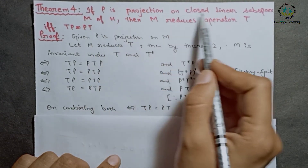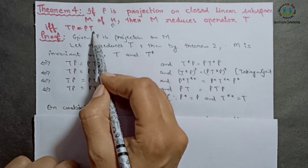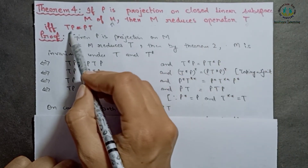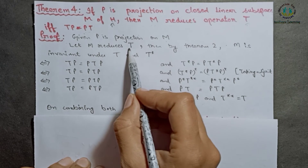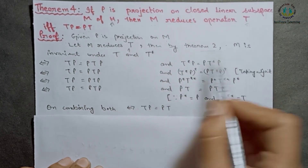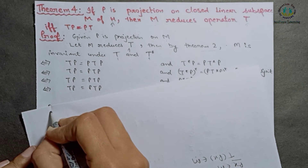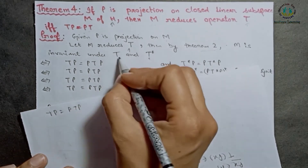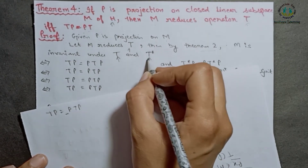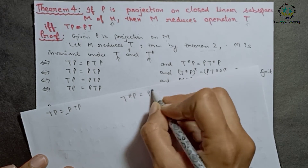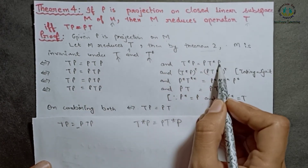Theorem 4: If P is a projection on closed linear subspace M of H, then M reduces operator T if and only if TP equals PT. If M reduces T, then by Theorem 2, M is invariant under both T and T star. Applying the result of Theorem 3 to T star as well: if M is invariant under T star, then T star P equals PT star P.